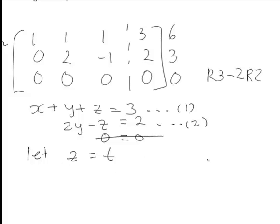We can now substitute z equals t into equation two to find 2y minus t is equal to 2. And that can then be solved, rearranged for y to find that y is 1 plus 1 half t.